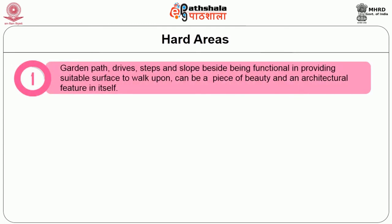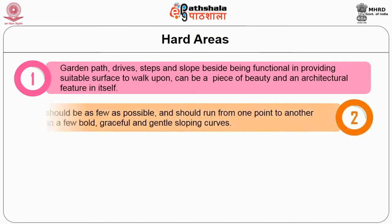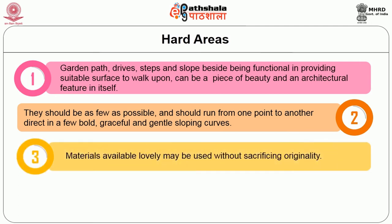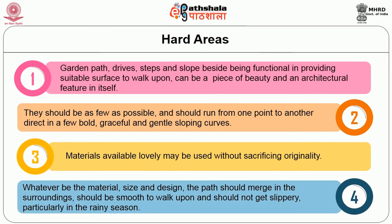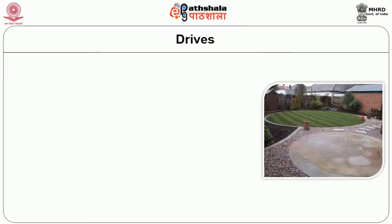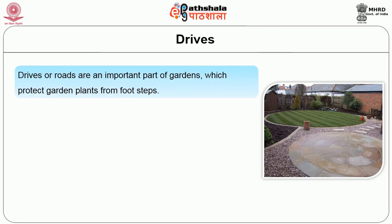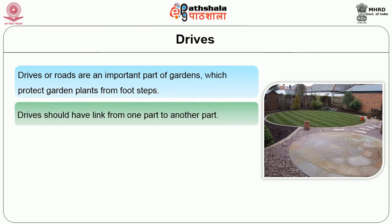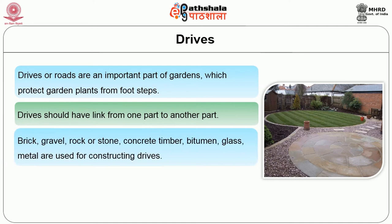Garden paths, drives, steps and slopes — besides being functional in providing a suitable surface to walk upon — can be a piece of beauty and an architectural feature in themselves. They should point to another direction in a few bold, graceful and gently sloping curves. Whatever the material, size and design, paths should be comfortable to walk upon and should not get slippery, particularly in the rainy season. Drives or roads are an important part of the garden which protect garden plants from footsteps. Drives should have links from one part to another. Brick, gravel, rock or stone, concrete, timber, bitumen, glass and metal are used for constructing drives. Sometimes the interspaces can be planted with ground-cover spreads.